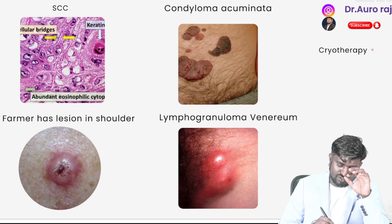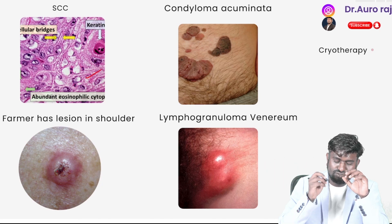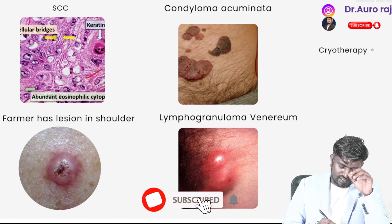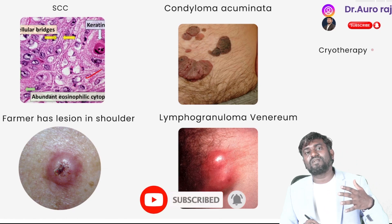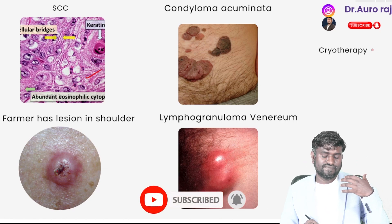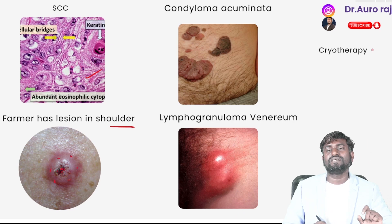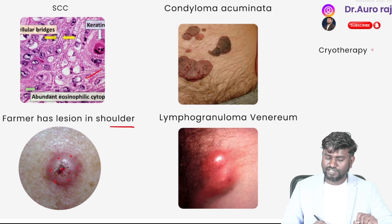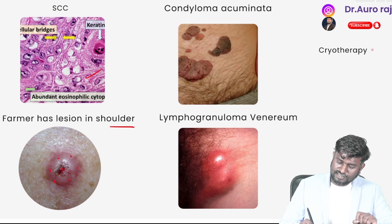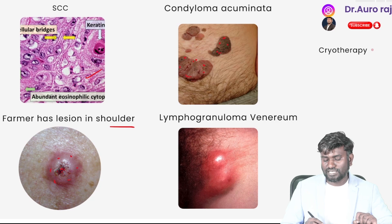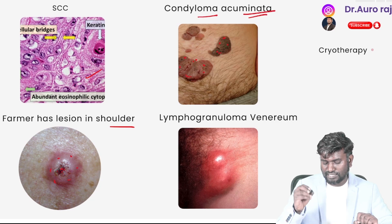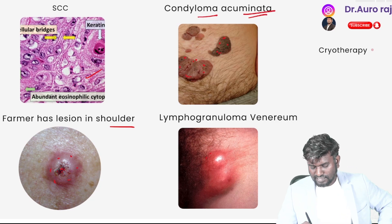This histopathological image shows squamous cell carcinoma. In the exam, if a farmer is presented with lesions on the shoulder and you see keratin debris over the lesion, that points to squamous cell carcinoma. This image is condyloma acuminata, and this image is lymphogranuloma venereum (LGV). The treatment for condyloma acuminata is cryotherapy.